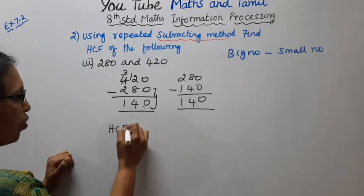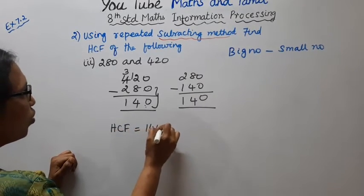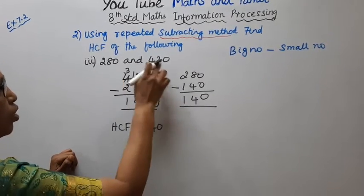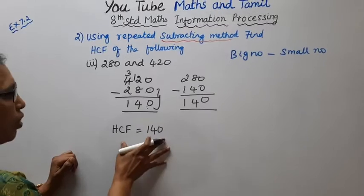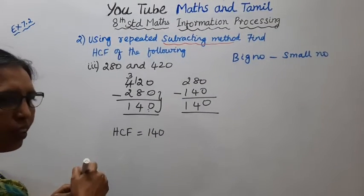HCF is equal to 140. For 280 and 420, the HCF is 140.